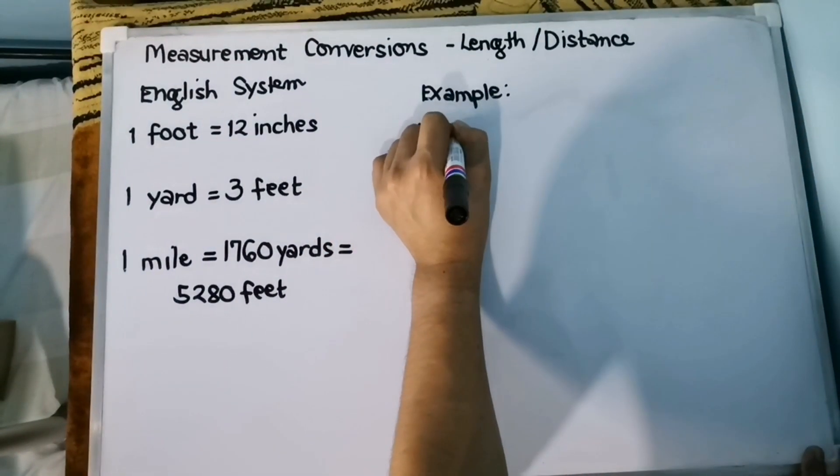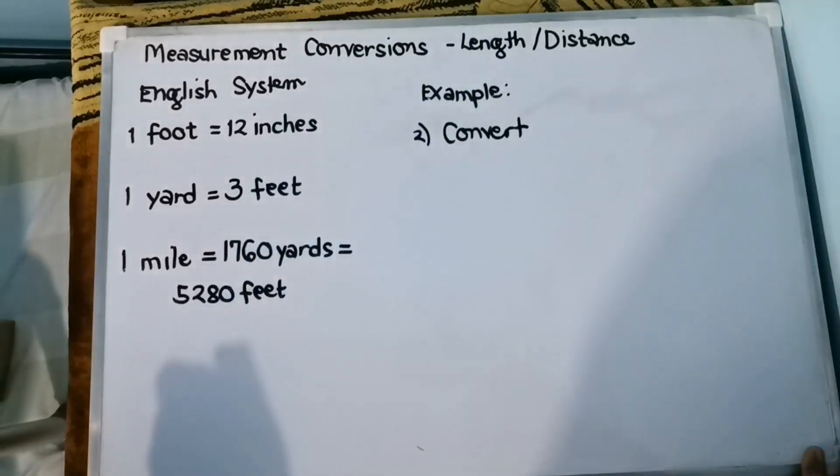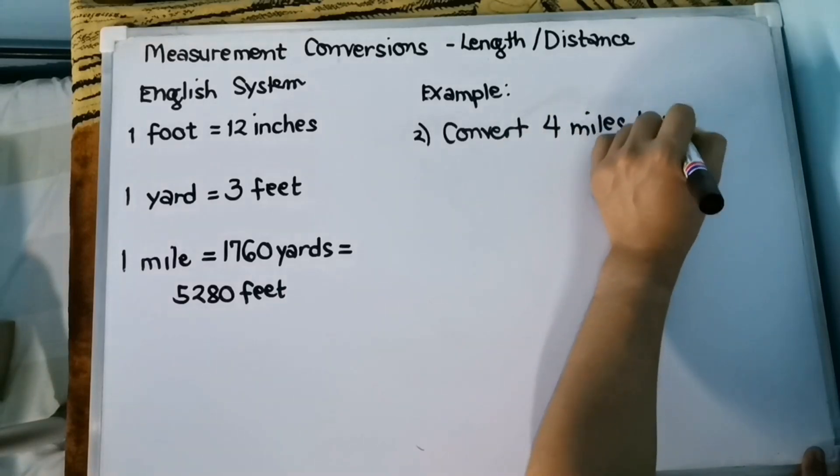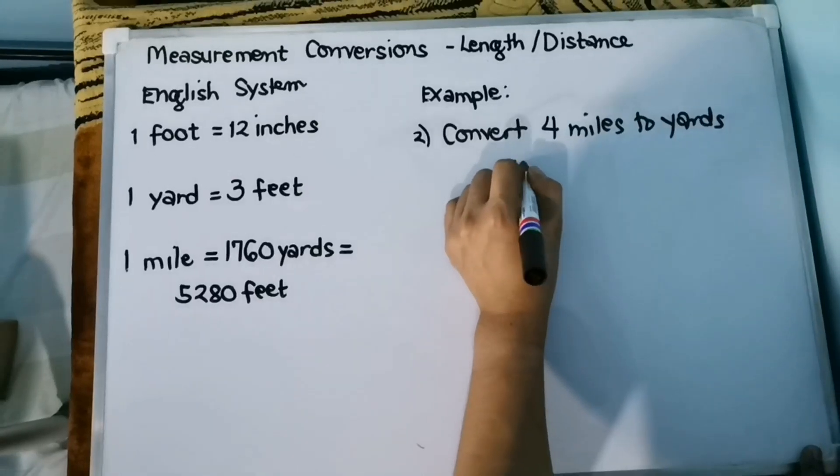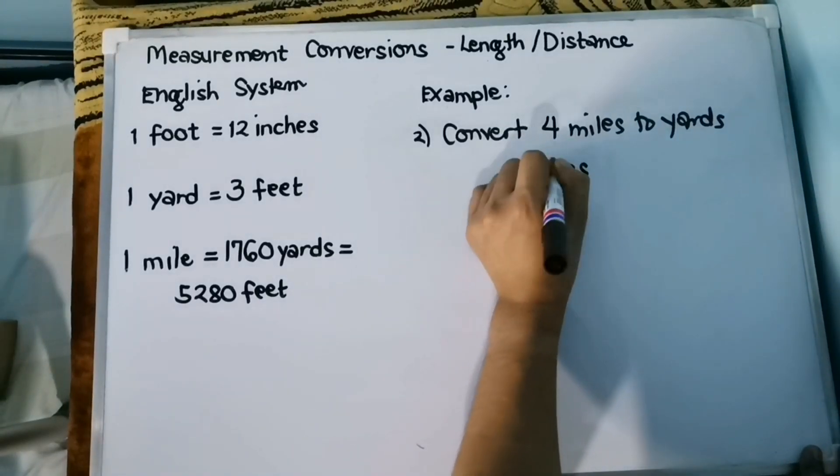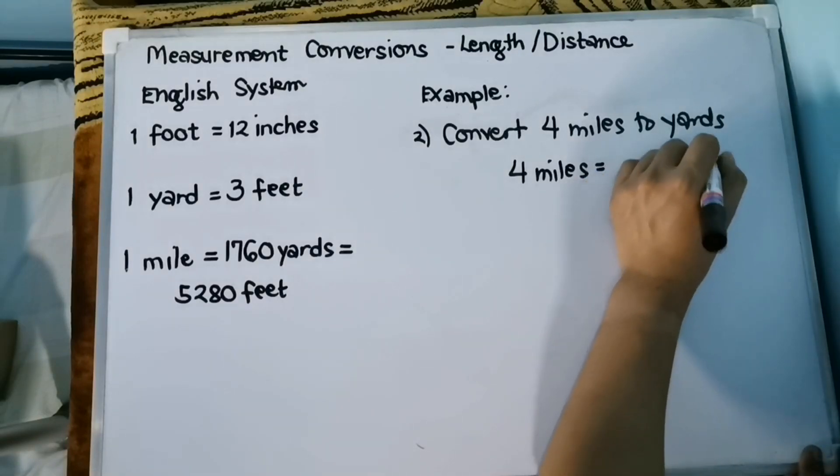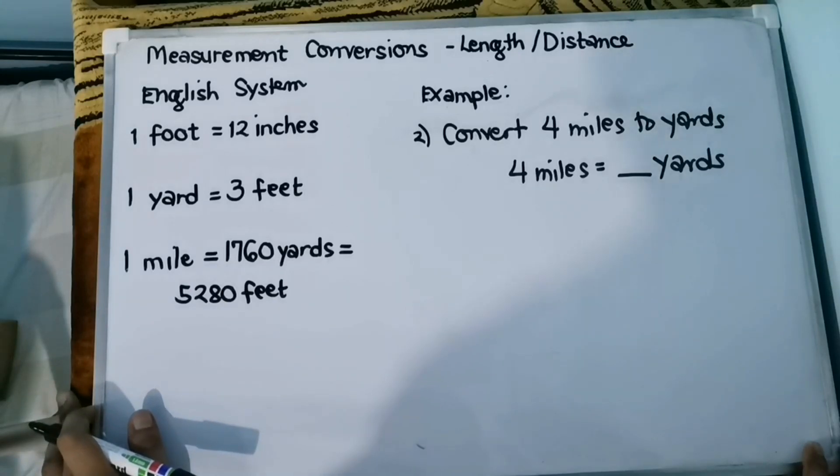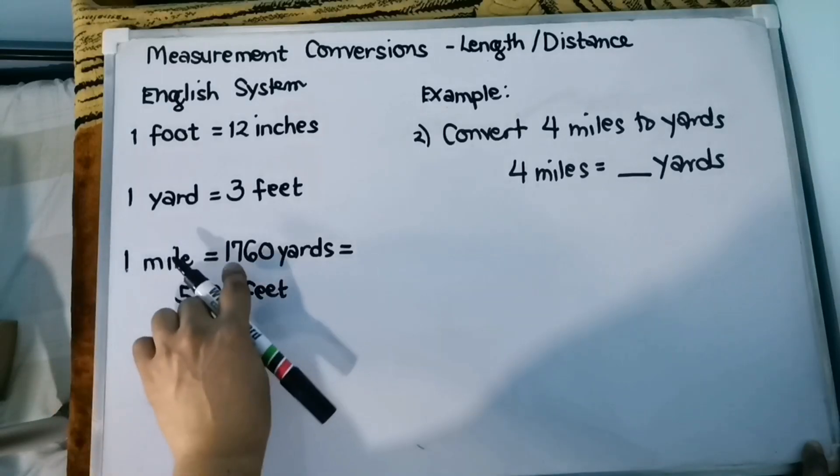Number 2. Convert 4 miles to yards. So that is 4 miles is equivalent to how many yards? To answer the problem, we can use the measurement conversion for length or distance. We need to identify the conversion factor to be used, which you will write as a fraction equal to 1. And that is 1 mile is equivalent to 1,760 yards.